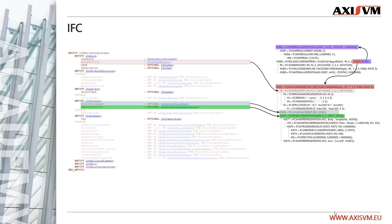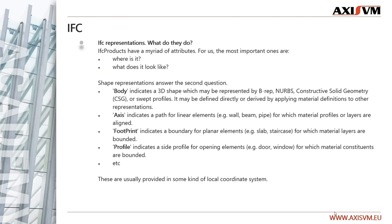There are a few difficulties though. We must talk about IFC representations and what they do. IFC products can be geometrically represented in a myriad of ways. These are referred to as shape representations. Although there are clear developers' agreements on when to use which, in practice this is not always respected. To pick a few: Body indicates a three-dimensional shape, which may be represented by BREP, NURBS, Constructive Solid Geometry (CSG), or Swept Solid. It may be defined directly or derived by applying material definitions to other representations.